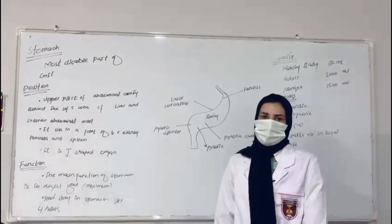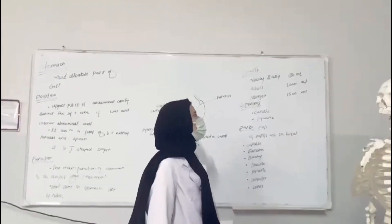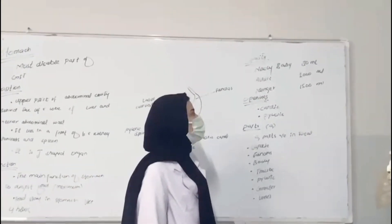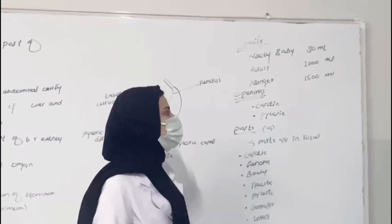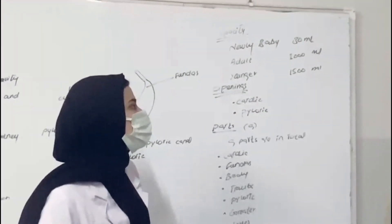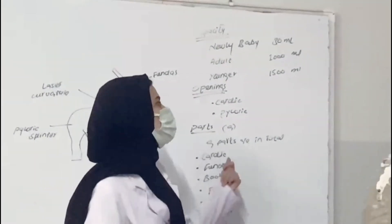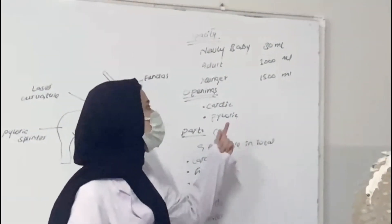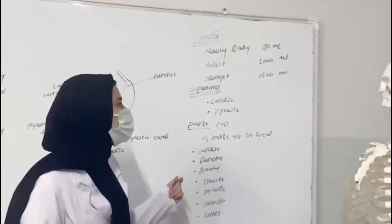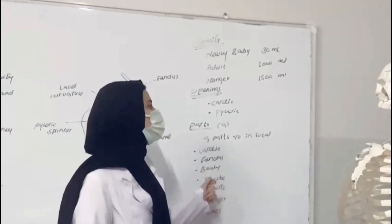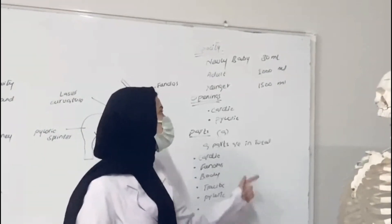Thank you. The capacity of the stomach: in a newborn baby it is 30 milliliters, in an adult it is 1,000 milliliters, and in older individuals it is 1,500 milliliters.